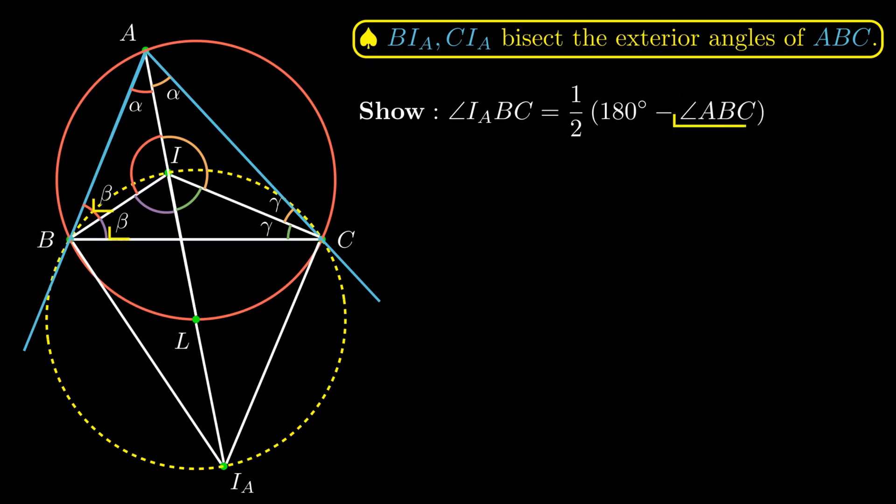Which is half of 180° minus 2β, and it equals 90° minus β.